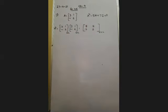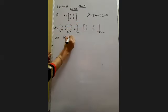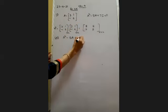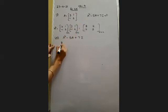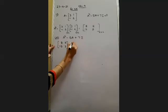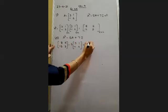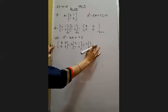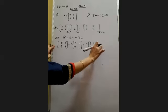Now compute the left-hand side: A² − 5A + 7I = [8, −5; 5, 3] − 5×[3, −1; 1, 2] + 7×[1, 0; 0, 1]. This is what we need to show equals the null matrix.